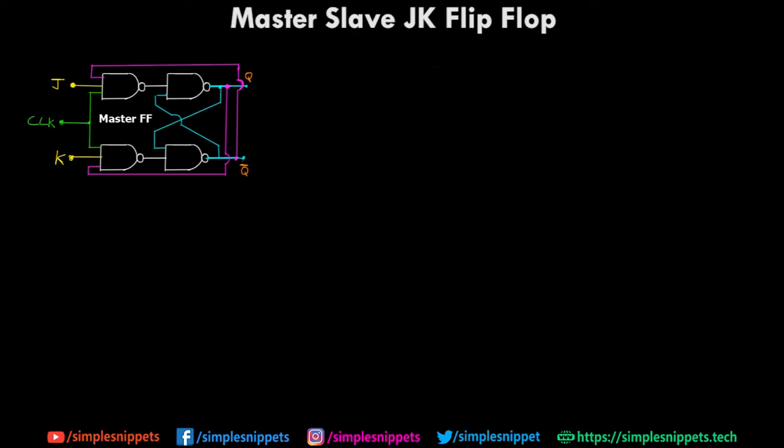In the previous video of this playlist we discussed in detail how the race condition happens, the difference between race and toggling, and what exactly happens behind the scenes when racing is occurring. We also discussed that there are three different ways to avoid that racing condition, and one of those was to use master slave flip-flop. This video will cover everything starting from the circuit diagram to the truth table, and then also see how the toggling happens with signal diagrams.